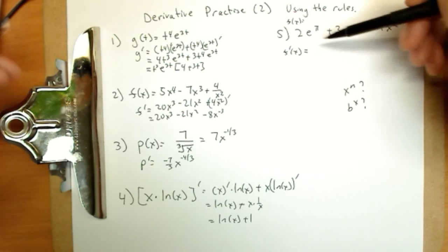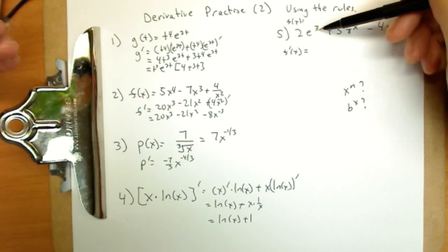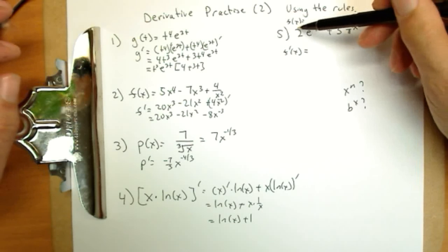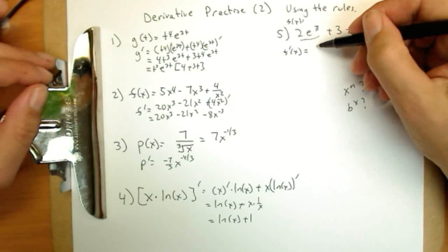E to the pi, which one is it like? Well, it's like none of them. E to the pi is a constant. 2e to the pi doesn't change on x at all. So this whole thing is a constant. Its derivative is zero.